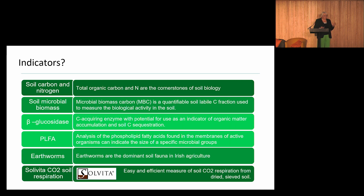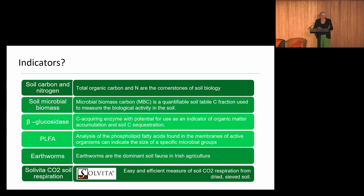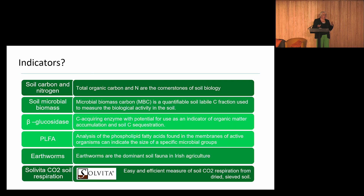In terms of biological characteristics, this has been our focus in some of the work we've been doing at AFBI. All the parameters listed have been measured across a range of environments and experimental trials. I've included soil carbon and nitrogen — some may say that's a chemical measurement, but they are really the cornerstones of soil biology. Changing soil carbon is very difficult to measure, so part of what we're trying to do is find indicators that could potentially be used as a proxy for change in soil carbon.